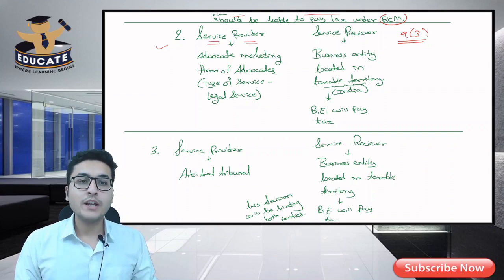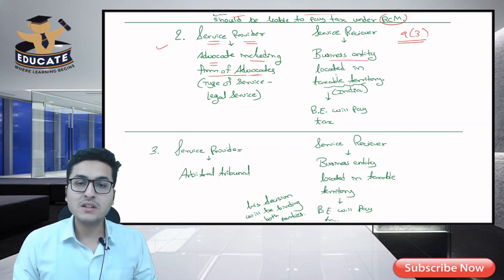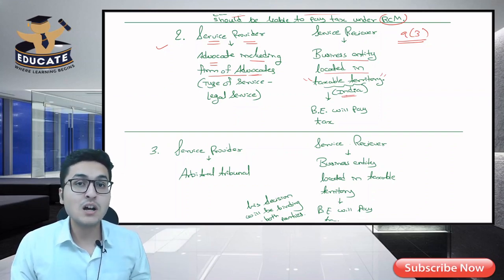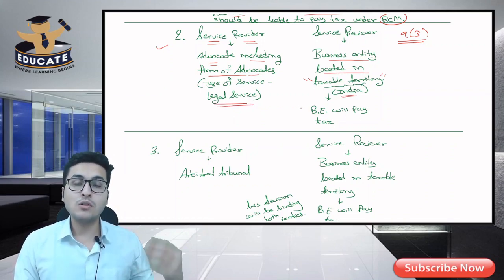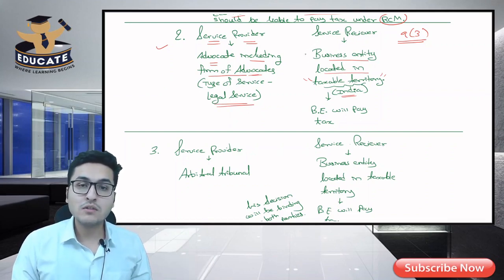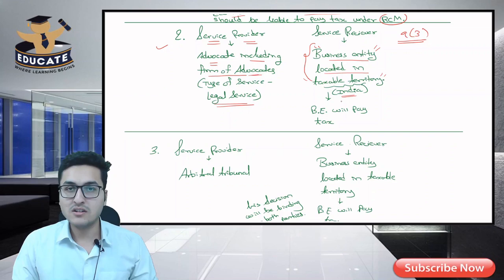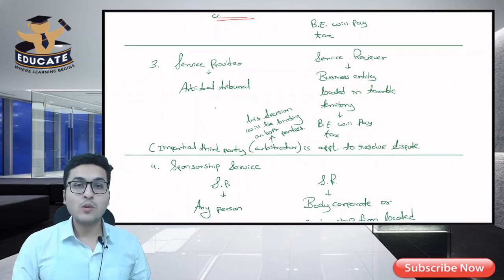Who is the provider of service? Provider of services is an advocate including the firm of advocates. And who is the receiver? Receiver is a business entity located in taxable territory. Taxable territory means where CGST provisions apply — in India including Jammu and Kashmir. So where an advocate or firm of advocates provides legal services to a business entity, the business entity will pay tax under reverse charge.